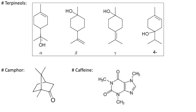Terpenols are terpenoids that contain an alcohol or hydroxyl group. There are different types: alpha-terpenol, beta-terpenol, gamma-terpenol, and delta-terpenol. The key things to remember are the relative positions of the carbon-carbon double bond and the hydroxyl group in each. Camphor is another important natural product — you should know and remember its structure. Please make note of their molecular structures with their names.